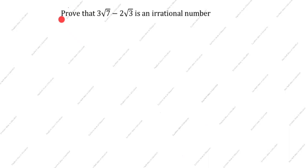Hi friends! Welcome to my channel Excellent Ideas in Education. Today we are going to solve this real number problem. This is a very important problem. Proof that 3 root 7 minus 2 root 3 is an irrational number.